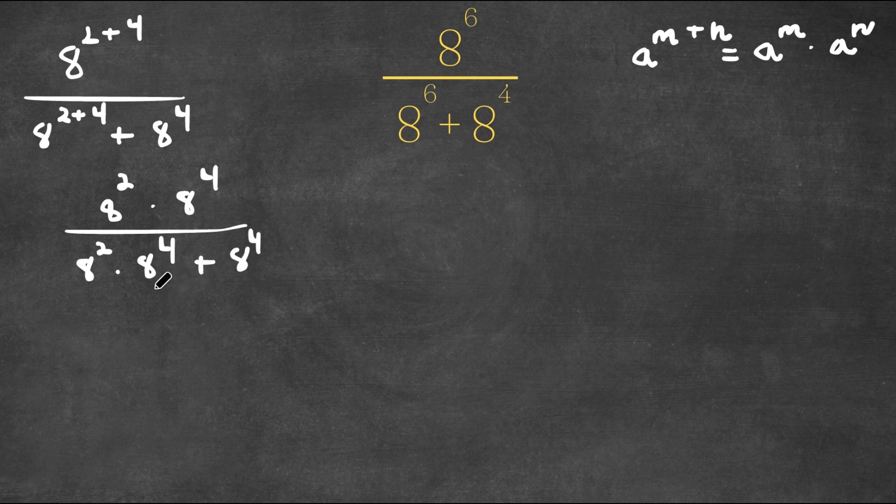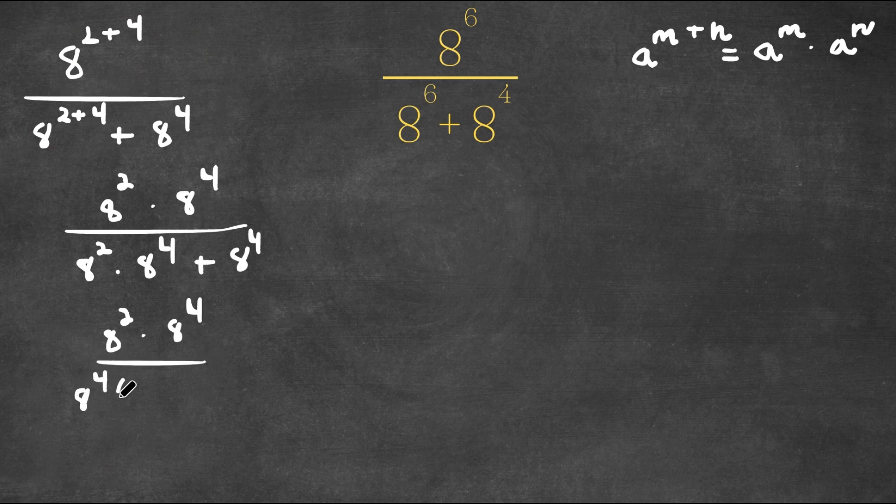I'm actually going to factor out 8 to the power of 4 from my denominator here. So now we'd have 8 to the power of 2 times 8 to the power of 4 over 8 to the power of 4 times.